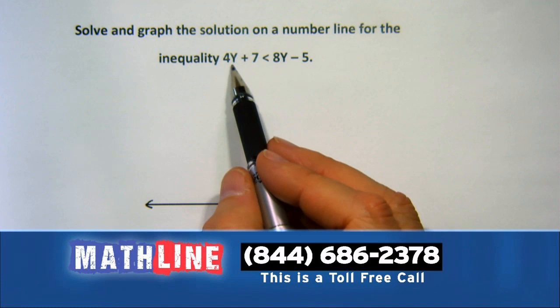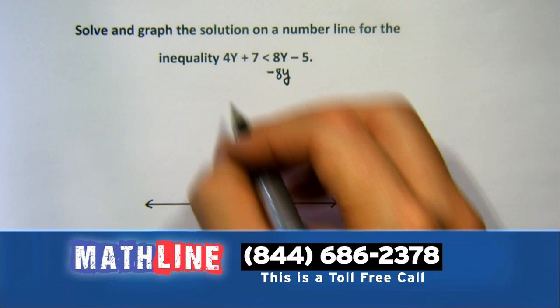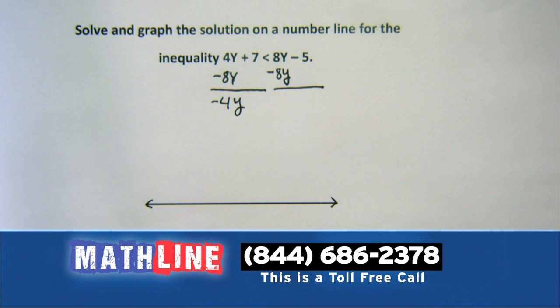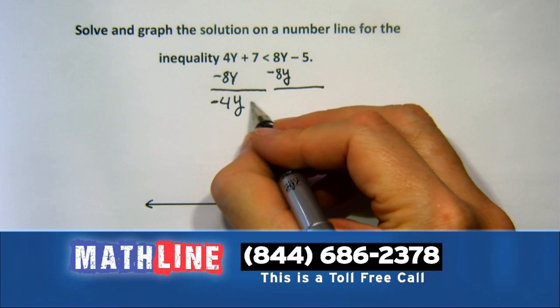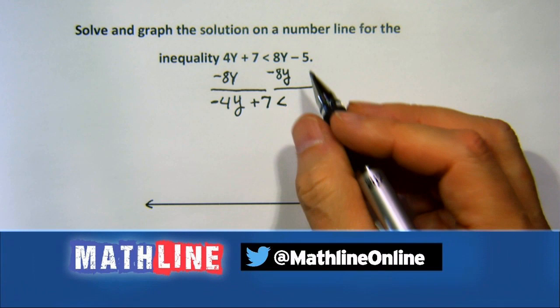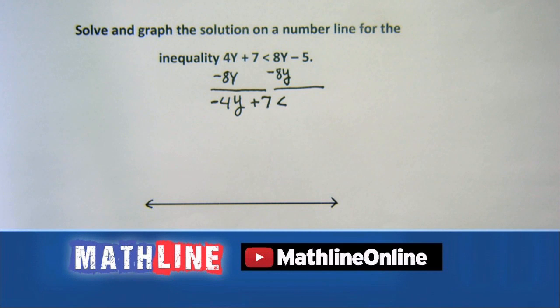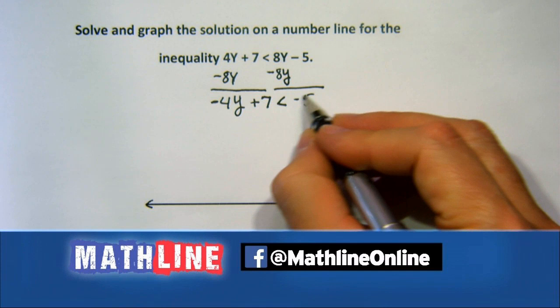I like to get my y's and variables on the left side — it'll be so much easier to read in the end. Let's knock out an 8y — that's going to take us to a negative 4y, which should go ding-ding-ding: a little red flag that says I've got to be careful in a bit. Keep the 7. We haven't switched anything; we just moved something from right to left — that's the subtraction property of inequality.